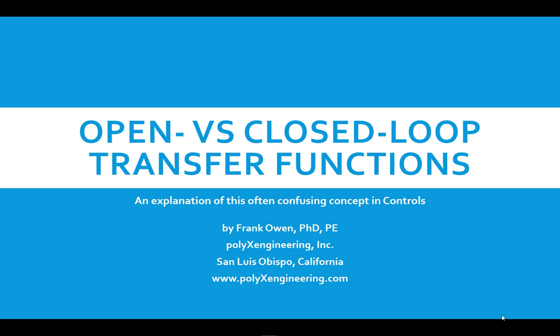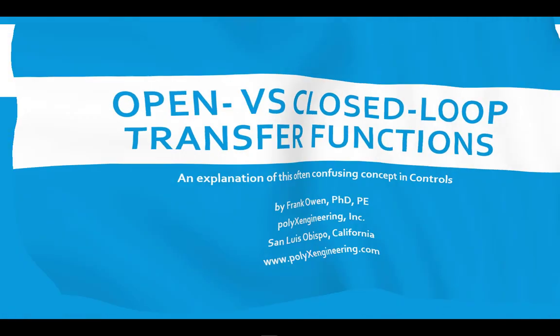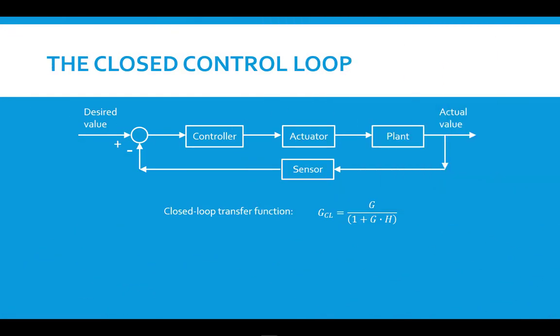This is a concept that is very confusing to students, and it needs to be mastered just to avoid the confusion. We saw in the first video in this series on control loop anatomy that a standard single input, single output control system has this configuration — four elements that are components of the system, five if you count the summing junction, the comparator.